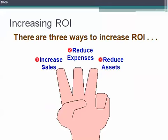There are three ways to increase our ROI. The first two involve improving our profit margin: increase sales and selling prices, and reduce expenses. The third is to reduce our assets, which will improve our asset turnover. Those are three steps that managers can pursue to try to boost return on investment.